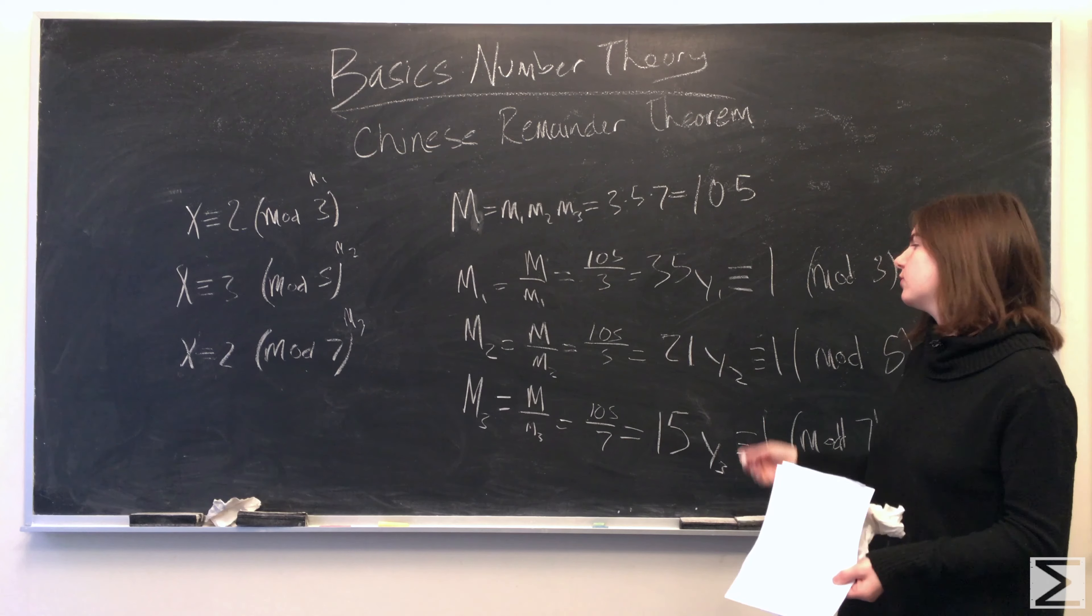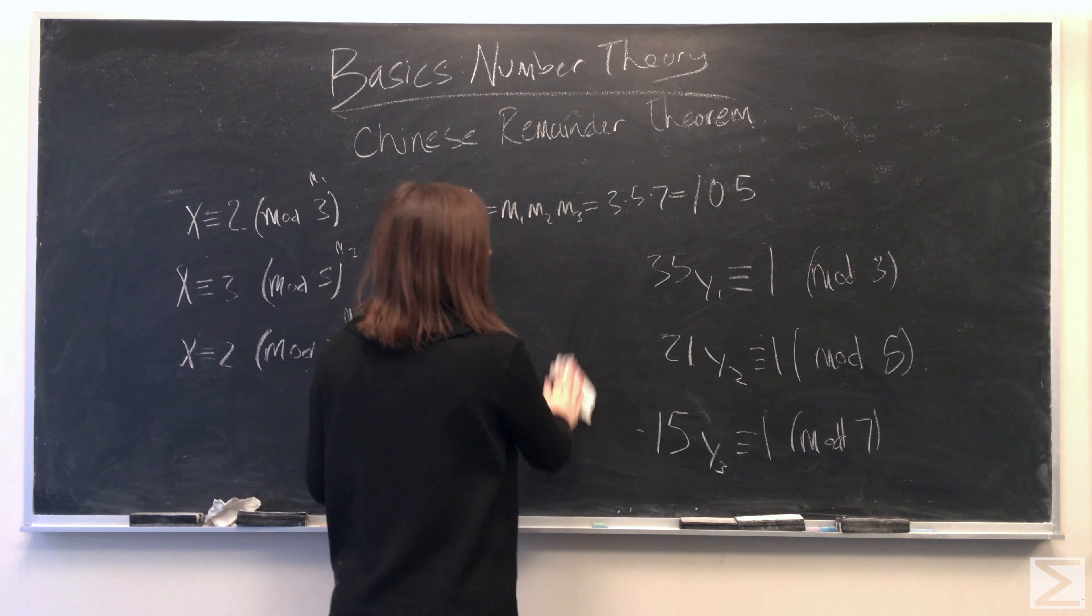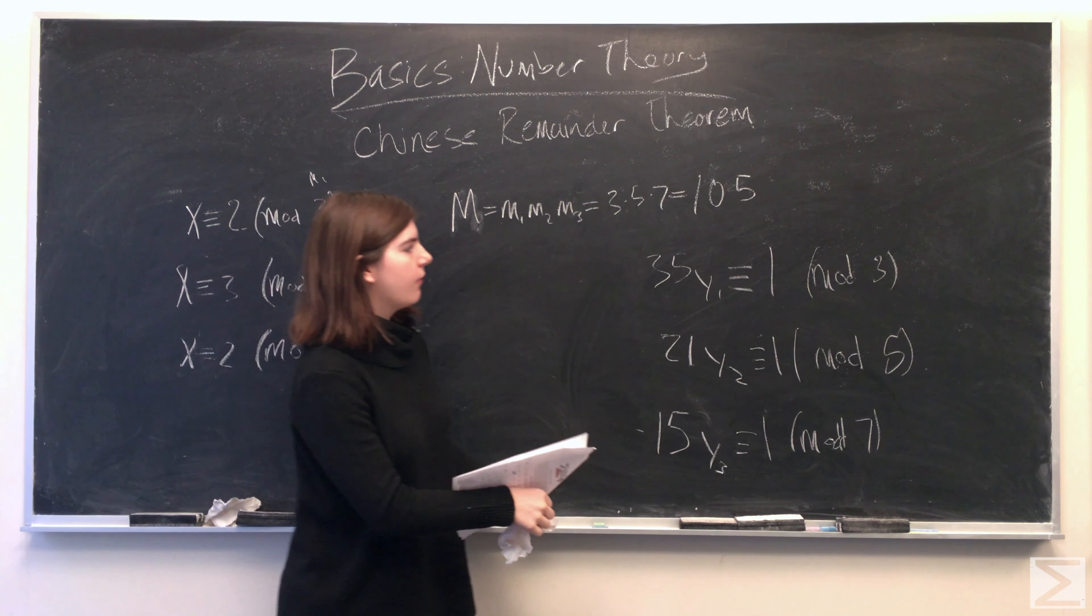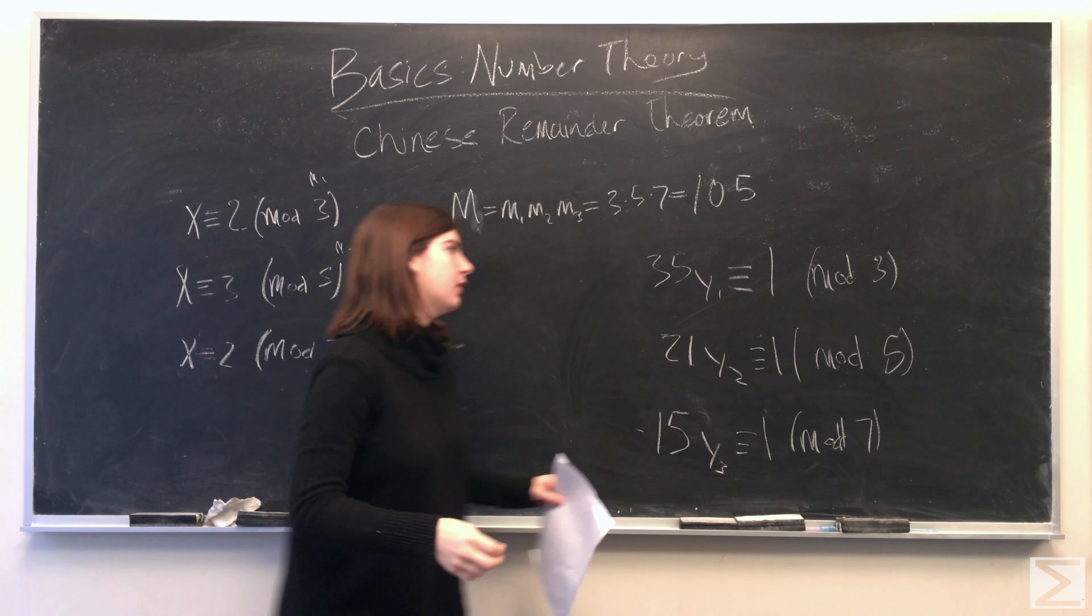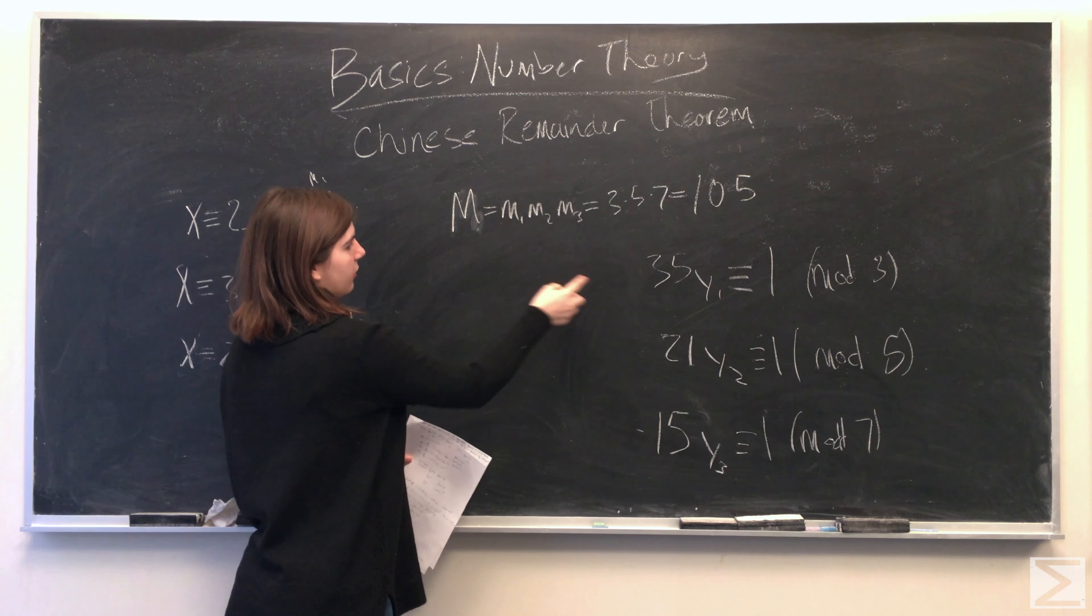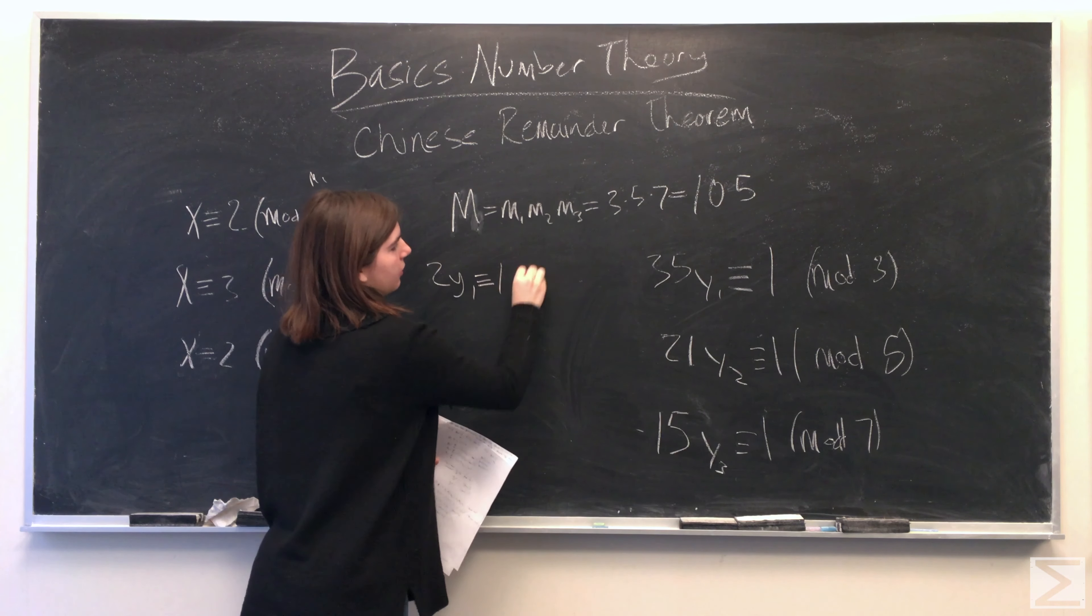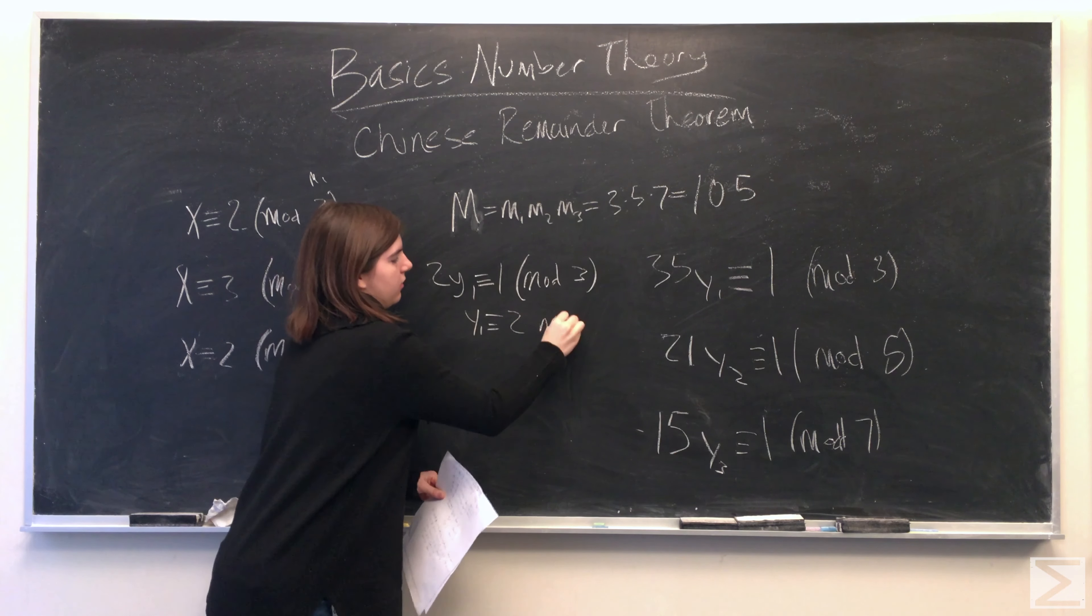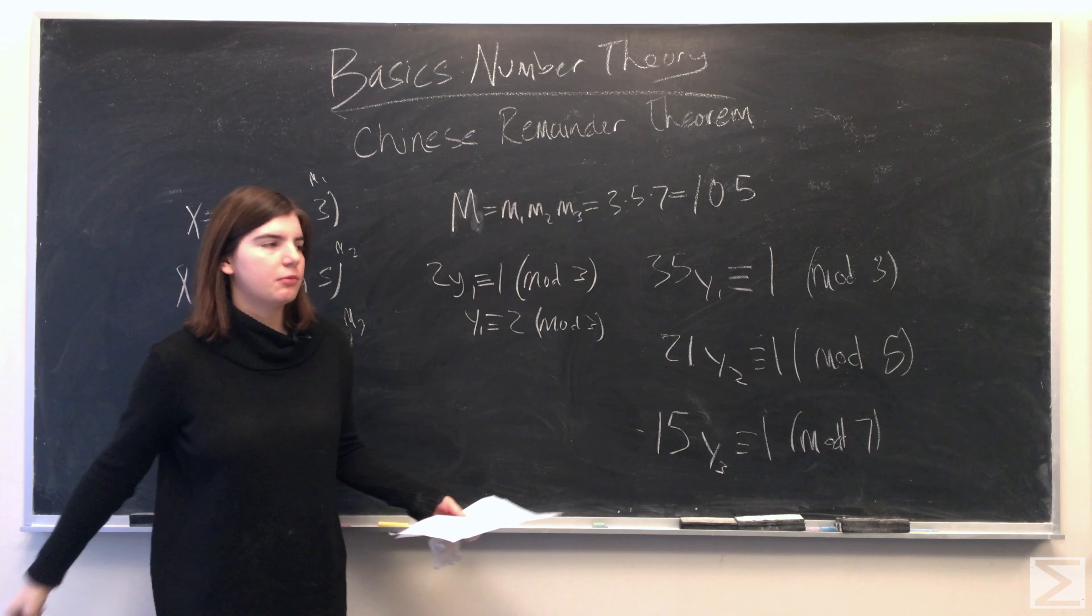Now we just have to solve these congruences for the y's. These numbers are small enough where they're pretty straightforward. So 35, when divided by 3, has a remainder of 2, so we have 2y1 is congruent to 1 mod 3. And we can see that y1 is congruent to 2, because 2 times 2 is 4, minus 1 is 3, and that's a multiple of 3.